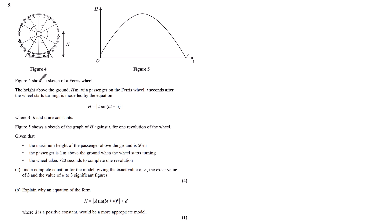Question 9. Figure 4 shows a sketch of a Ferris wheel. The height above the ground, h metres, of a passenger on the Ferris wheel, t seconds after the wheel starts turning, is modelled by the equation h equals the modulus of a sine bt plus alpha, in degrees, where a, b and alpha are constants.